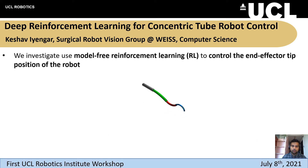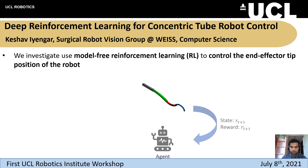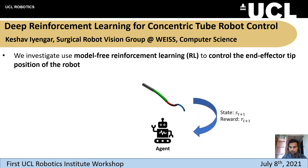We investigate using model-free reinforcement learning to control the end effector tip position. This involves formulating a state, a reward, an agent to learn the policy, and an action.